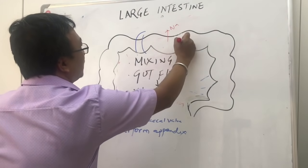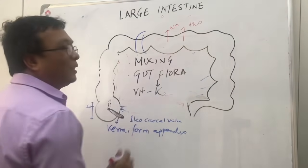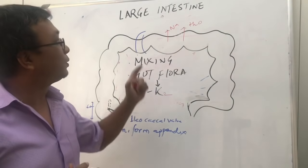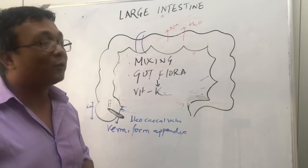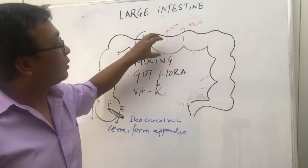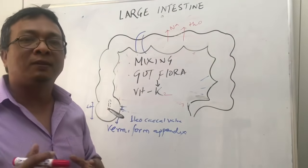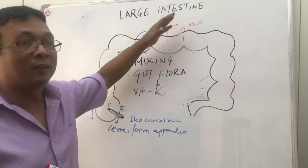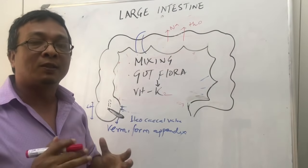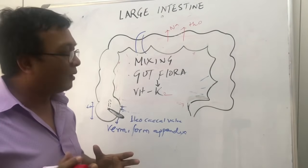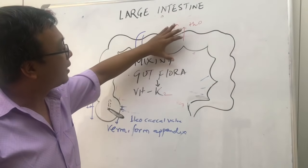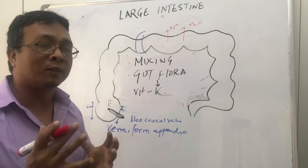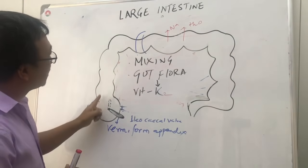The large intestine plays a huge role in the absorption of sodium and water. When more water is absorbed, the fecal content becomes very hard, resulting in constipation. When water absorption is less, it produces signs and symptoms like diarrhea. So absorption or secretion of water plays a very important role in diarrhea or constipation.